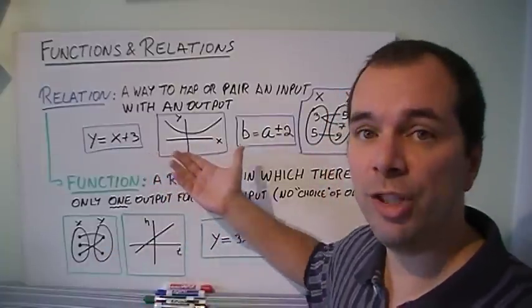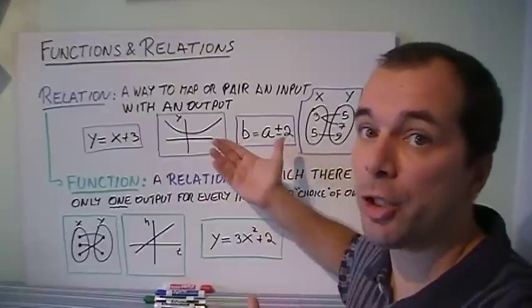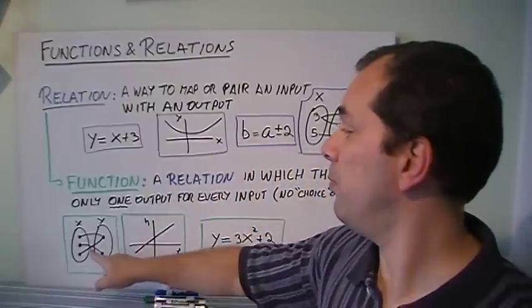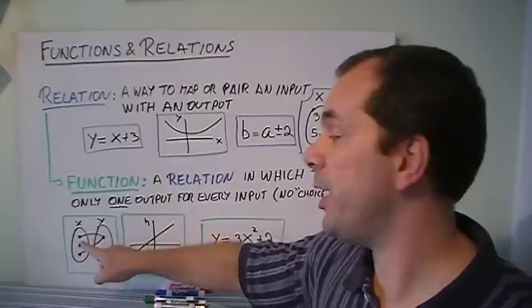There's nothing wrong with this one. They're just relations that are not functions. So for every input, there's only one output.